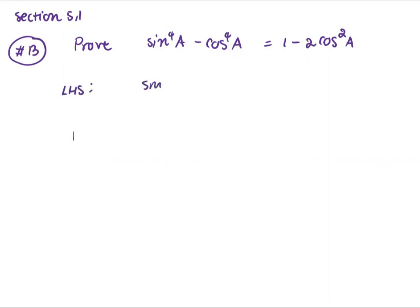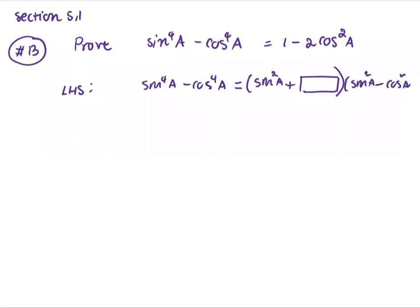With sin⁴A minus cos⁴A, we use the given term sin²A plus the missing part, multiplied by sin²A minus cos²A. We can use the difference of squares property: x² minus y² equals (x minus y)(x plus y).